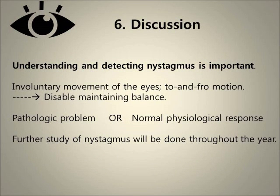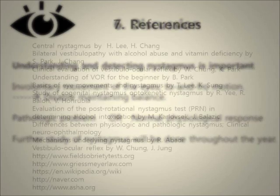Understanding and detecting nystagmus is important. It is generally an involuntary movement of the eyes, described as a to-and-fro motion. It can disable maintaining balance, which can alter movement in everyday lives. It can be a pathological problem, or as shown in Tests 1, 2, and 3, it can be triggered and experienced as a normal physiological response. Further study of nystagmus will continue throughout the year, including use of alcohol, because alcohol consumption produces similar effects to nystagmus.